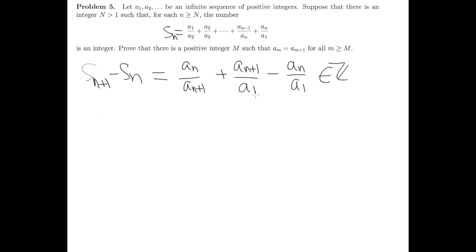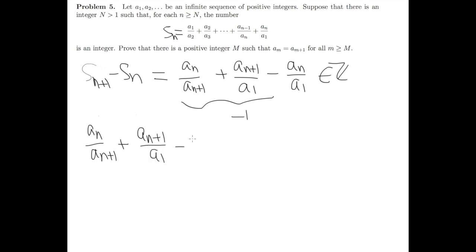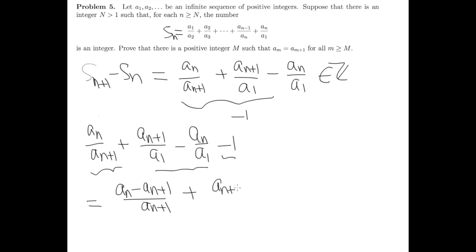By assumption this is an integer. This form is not particularly nice because we get some fractions, and it's not easy to manipulate fractions giving an integer. A simple trick is to subtract 1 on the right-hand side — subtracting 1 still gives an integer — and we can factorize it very nicely. So a_n over a_{n+1} plus a_{n+1} over a_1 minus a_n over a_1 minus 1 gives us, after factorization: (a_{n+1} minus a_n) times (a_{n+1} minus a_1) over a_{n+1} times a_1.